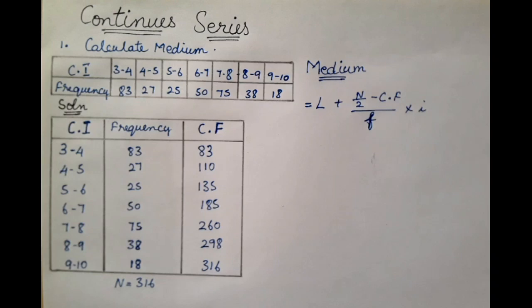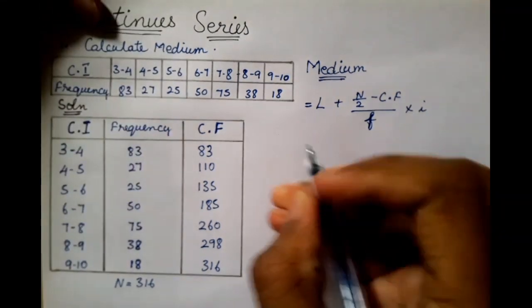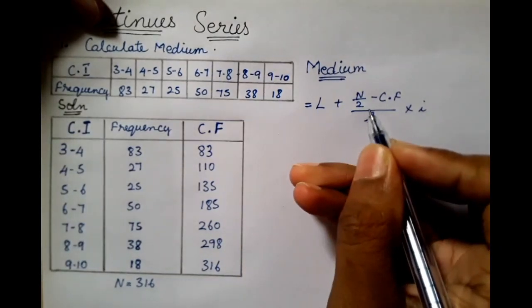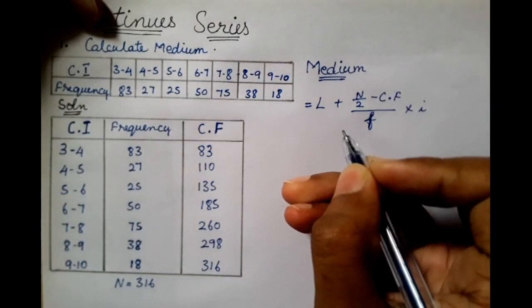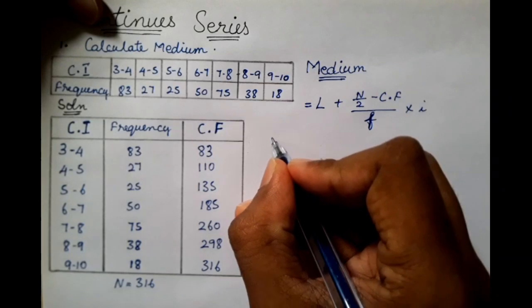Now, L will be calculated. How does N by 2 change? First of all, if we calculate N by 2, we will find L plus CF and F. First, we calculate N by 2.